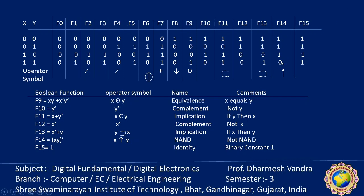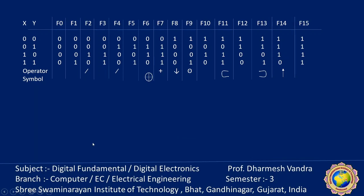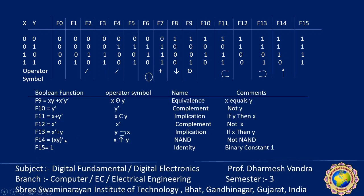F14 is 1,1,1,0 — it is the complement of AND gate, so it is called NOT-AND or NAND gate. F15: all outputs are 1, so it is always 1 — binary constant 1 (identity 1). These 16 combinations, F0 to F15, are all possible.